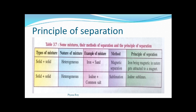Now, coming to the principle of separation. For a solid-solid mixture — the nature of the mixture is heterogeneous — the example is iron and sand. Here, we will be choosing the method of magnetic separation, because one of the components is a magnetic substance. As iron is a magnetic substance, we can easily separate these two with a magnet. The principle of separation is: iron, being magnetic in nature, gets attracted to a magnet.